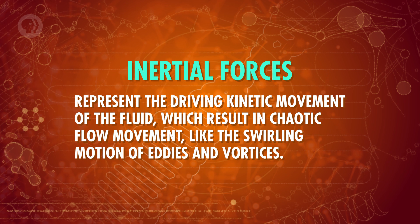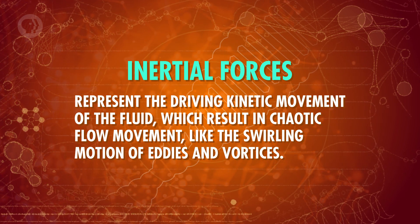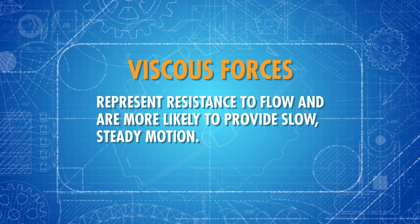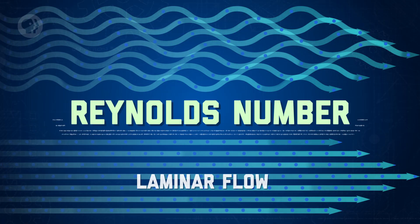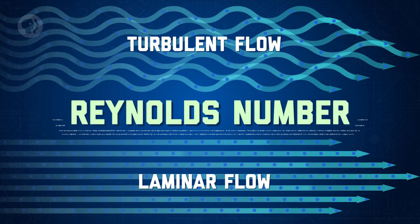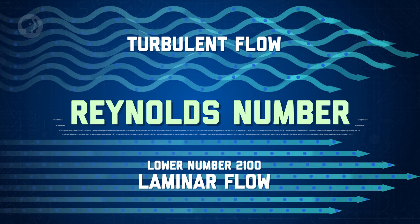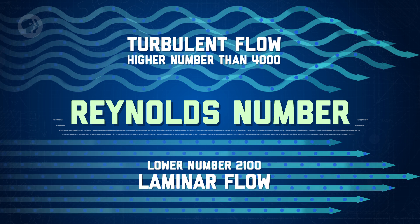We can look at the Reynolds number as a ratio of inertial forces to viscous forces. Inertial forces represent the driving kinetic movement of the fluid, which result in chaotic flow movement like the swirling motion of eddies and vortices. Viscous forces represent resistance to flow and are more likely to provide slow, steady motion. So the more powerful your viscous forces are, the slower and more controlled the fluid's motion will be. The higher your inertial forces are, the more chaotic your flow will be. Therefore, a low Reynolds number represents laminar flow, while a high Reynolds number represents turbulent flow. In a pipe, laminar flows will usually have a Reynolds number lower than 2100, while turbulent flows will usually be higher than 4000, and a Reynolds number between these two values typically represents transitional flow.